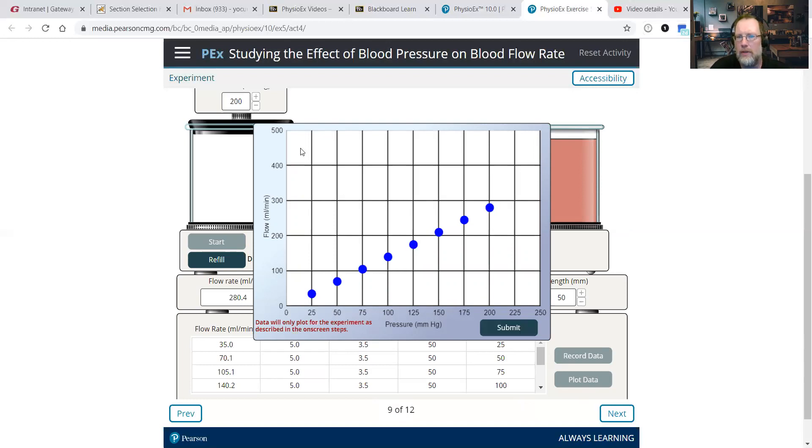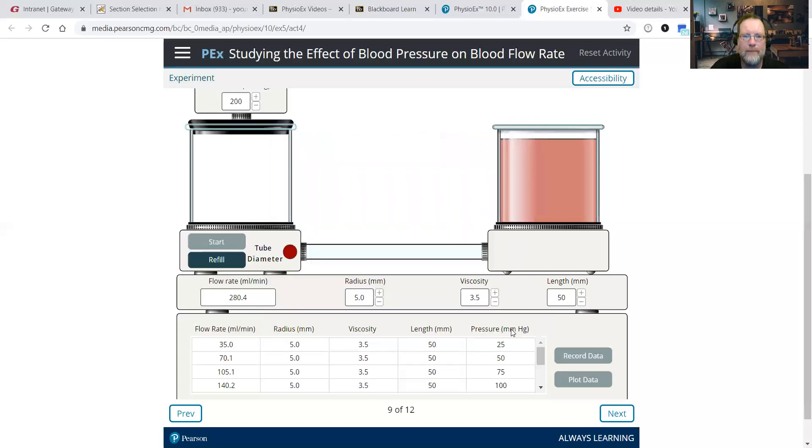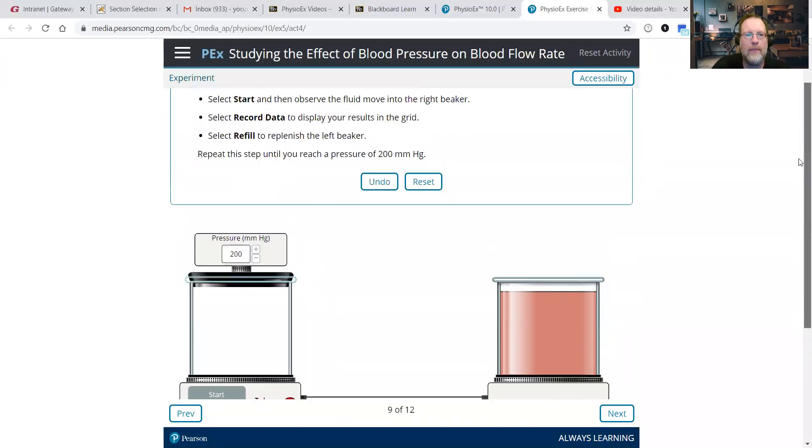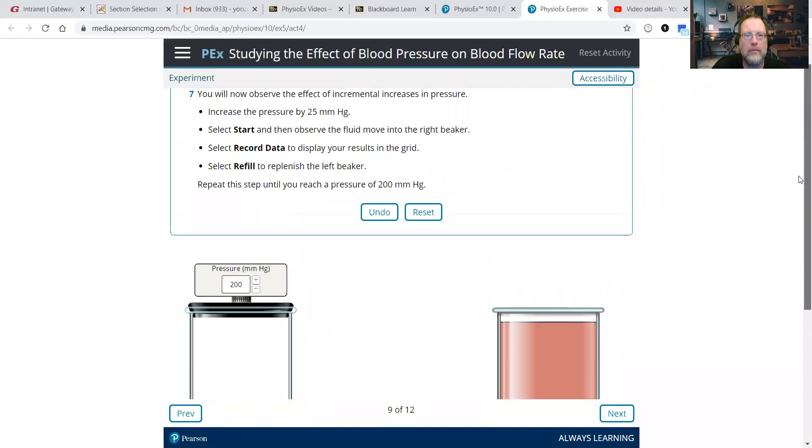Unlike what we saw with the radius, viscosity, length, we saw those numbers start to kind of level off. We're not seeing that leveling off occur here. So we see more of a direct proportion, proportional increase in flow rate with blood pressure.